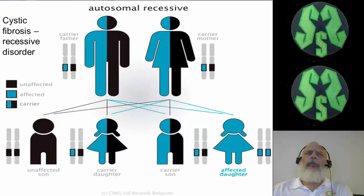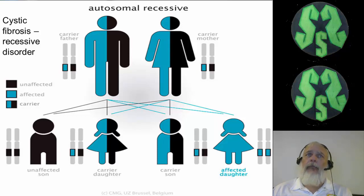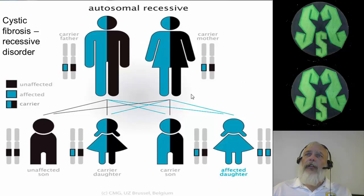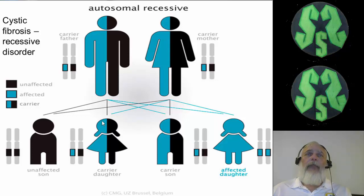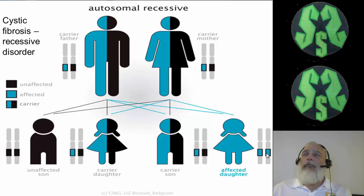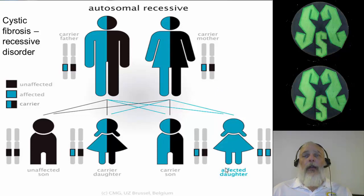Here's another disorder that can be passed on — cystic fibrosis. This is a recessive disorder, which means to be affected by cystic fibrosis you must get that trait from both your mom and your dad. If you only get it from your mom, you do not have cystic fibrosis, though you can pass it on to your children. To be affected, you must receive both recessive cystic fibrosis genes — one from each parent.